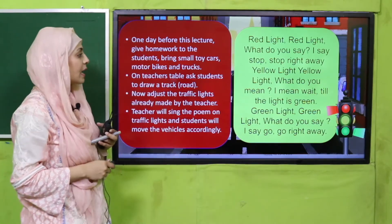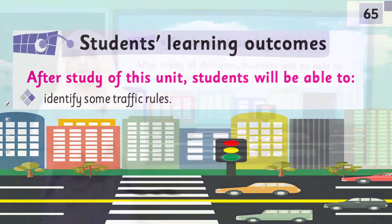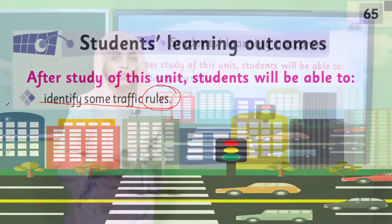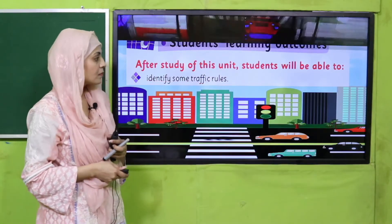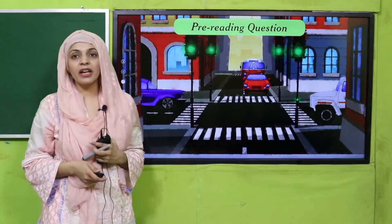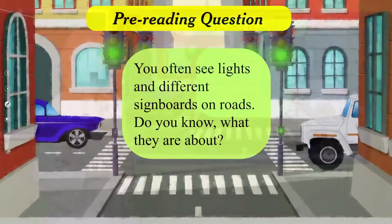This is how traffic lights control traffic and prevent accidents. In today's lecture, students will be able to identify some traffic rules. The pre-reading question is: you often see lights and different sign boards on the road — what do you know about what they are?